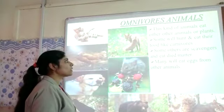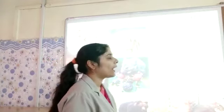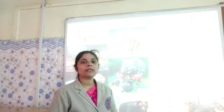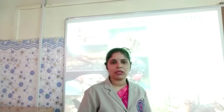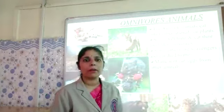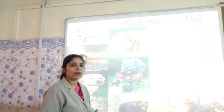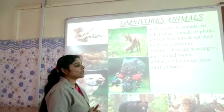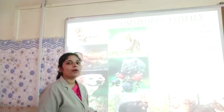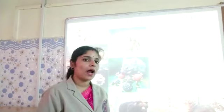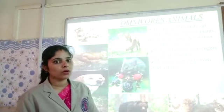Do you know who scavengers are? Scavengers are animals who eat the flesh of dead animals. The hawk, for example, always depends on dead animals. So omnivores are animals who depend on both kinds of sources of food — it can be plants and it can be animals.